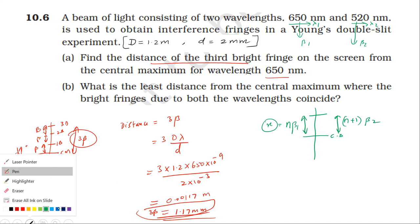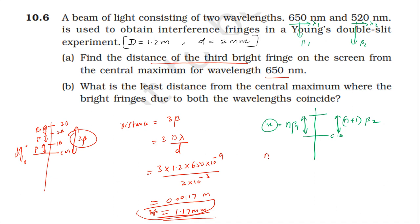Setting up the equation: n × β₁ = (n+1) × β₂. Using the formula β = Dλ/d, substituting β₁ = Dλ₁/d and β₂ = Dλ₂/d. The D and d cancel, giving n × λ₁ = (n+1) × λ₂.